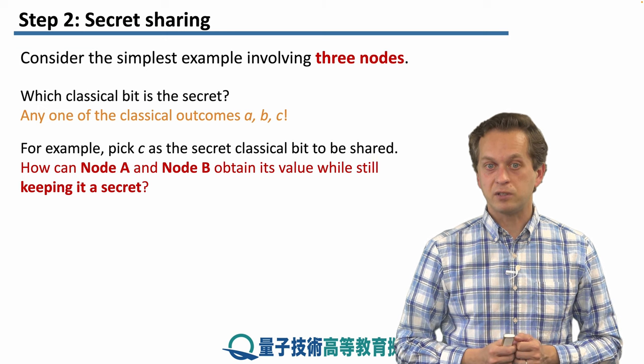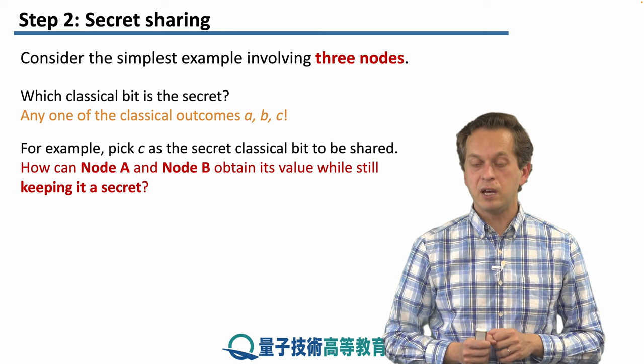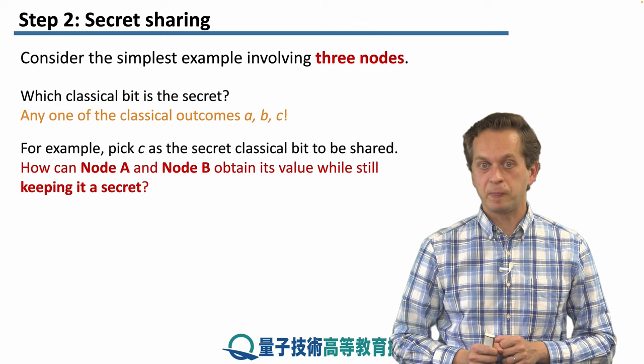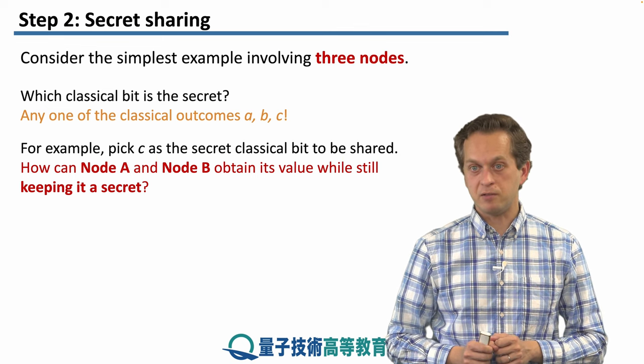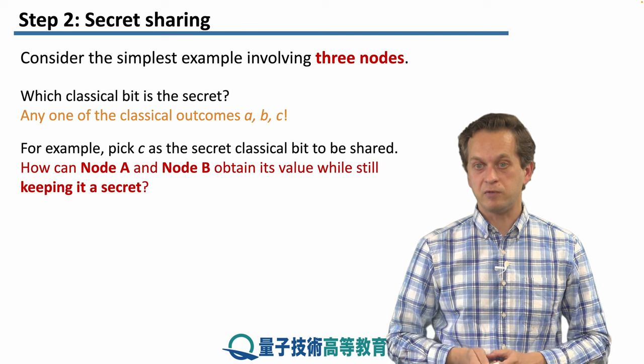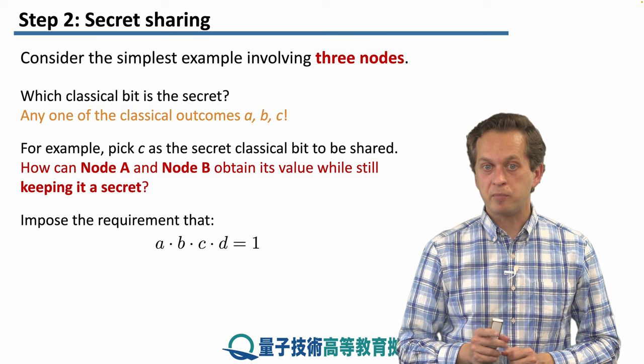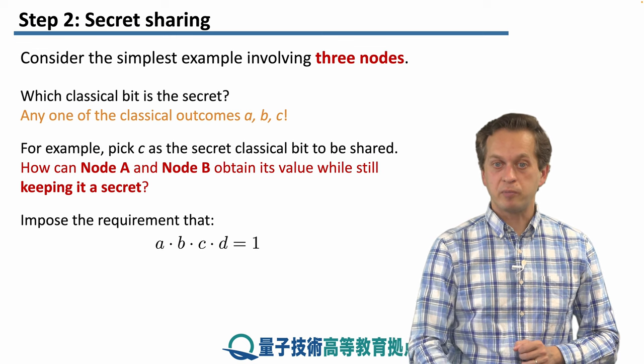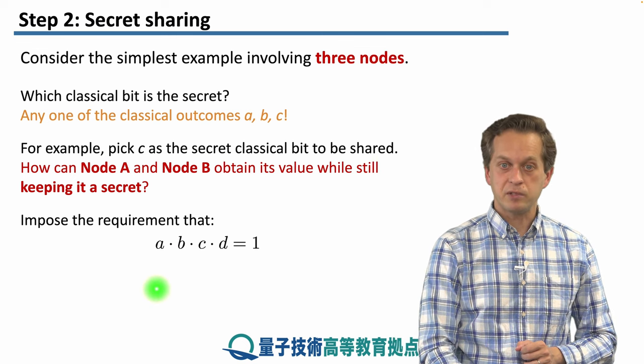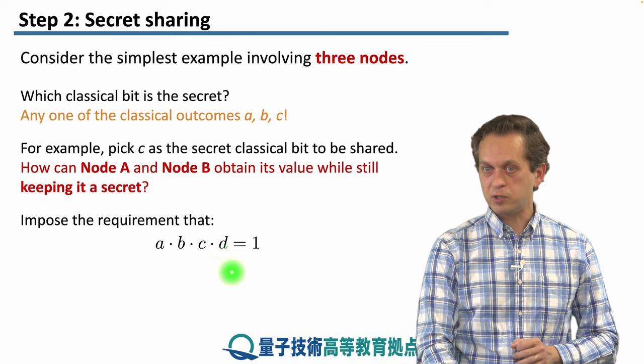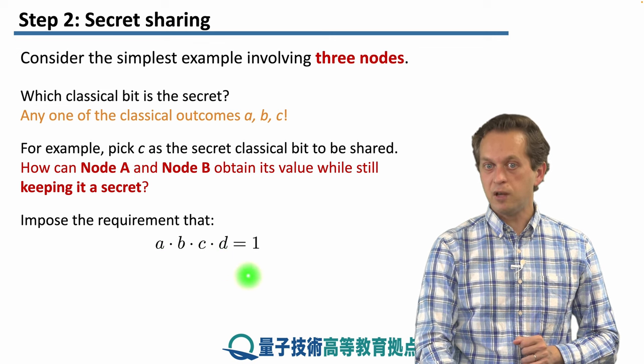So now we have to think of the question: How can node A and node B obtain the value of node C's measurement outcome while still keeping it a secret, so without revealing it to the rest of the network? And this can be achieved by a clever trick and by imposing the requirement that the product of the classical outcomes a × b × c × d is equal to one.